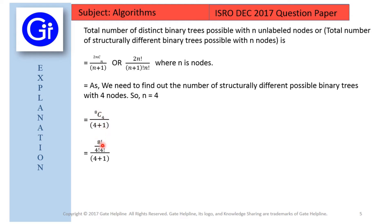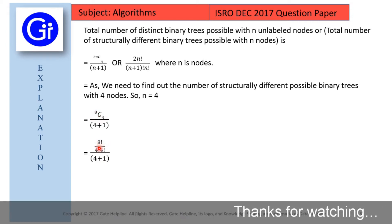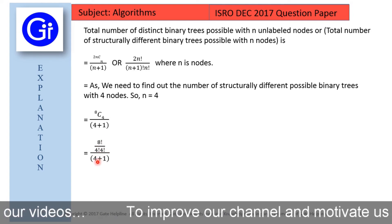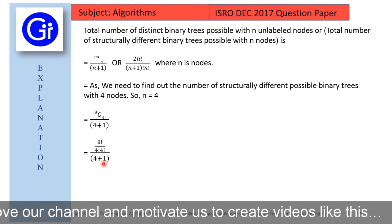So it results in 8 factorial upon 4 factorial into 4 factorial upon 4 plus 1. As you know how to resolve this 8Cn, that is 2n factorial upon 2n minus n factorial and n factorial upon n plus 1, that is 4 plus 1.